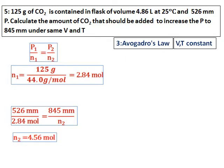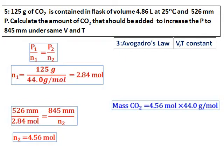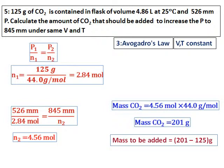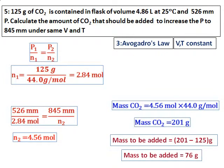Once N2 is found, the question asks how much CO₂ should be added — so convert the moles N2 = 4.56 moles into grams by multiplying by the molar mass. The mass of CO₂ comes out to 201 grams. Since the initial mass was 125 grams, the amount to be added is the difference: 76 grams. Adding 76 grams to the original 125 grams will change the pressure to 845 mmHg at constant volume and temperature.